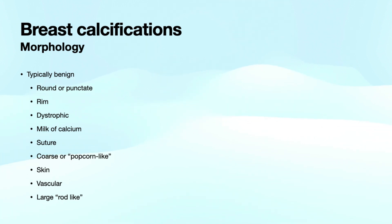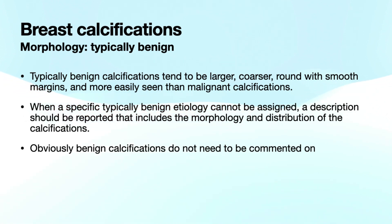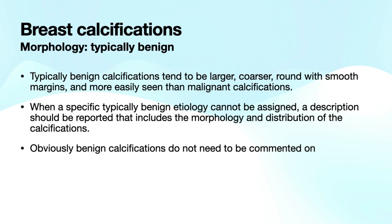The first thing we'll discuss are the typically benign morphologies for calcifications. Typically benign calcifications tend to be larger, coarser, round with smooth margins, and they're also more frequently easy to see than their malignant counterpart calcifications, which tend to be finer, more pleomorphic, and a little more faint in the breast. When a specific typically benign etiology cannot be assigned, you should describe the calcifications in the report including the morphology and distribution to help determine a management decision. Benign calcifications don't need to be commented on, but if they are, you should utilize a BI-RADS 2 benign assessment code rather than a BI-RADS 1 negative assessment code.